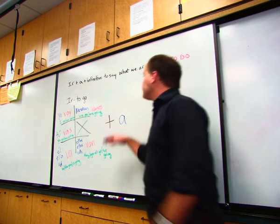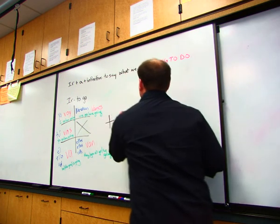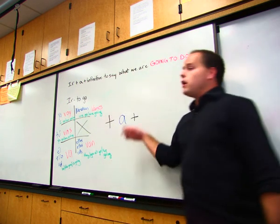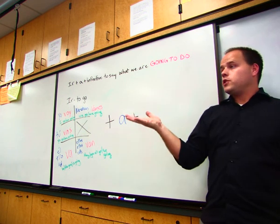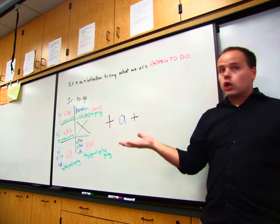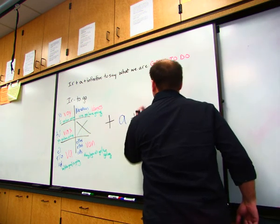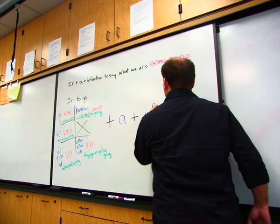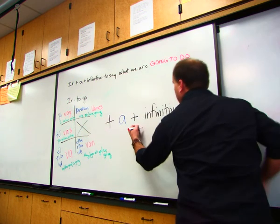In this case, we're not talking about a place, we're talking about something that we are going to do, which is a verb. Now we have an infinitive. What's an infinitive? A non-conjugated verb. An infinitive is a non-conjugated verb.